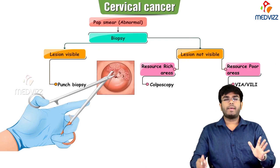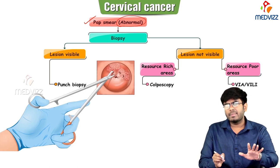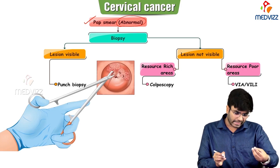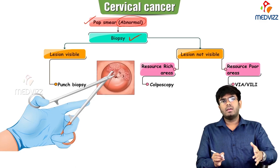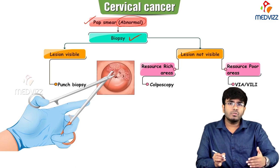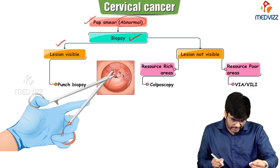If the Pap smear result is abnormal — meaning I am seeing certain dysplastic cells — I should go with biopsy. Based on a Pap smear alone, I shouldn't do treatment because Pap smear is a screening test. If I can see a lesion directly on the cervix, take a punch biopsy directly. If the lesion is not visible in a resource-rich area, go with colposcopy — a magnification device to localize dysplastic cells and take a biopsy from there.